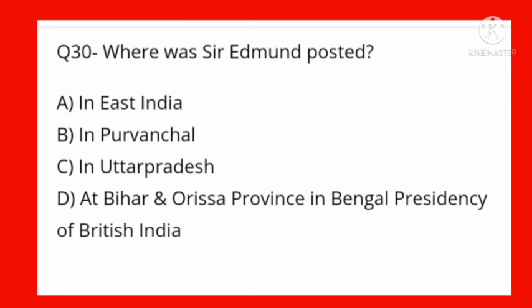Where was Sir Edmund posted? Options: in East India, Kurmanchal, Uttar Pradesh, Bihar or Orissa Province, Bengal Presidency of British India. Option D is correct — at Bihar Orissa Province in Bengal Presidency of British India.